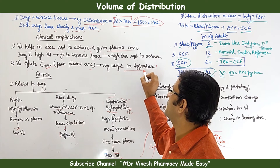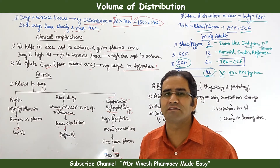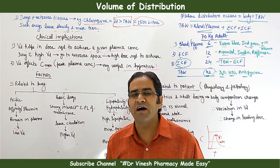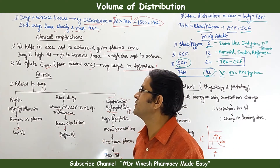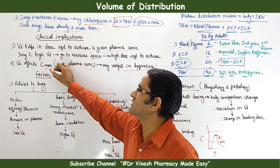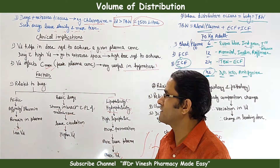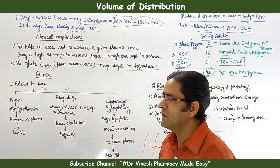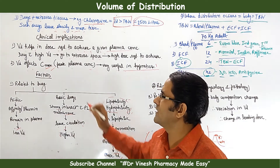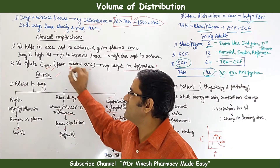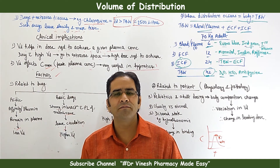The second clinical implication is that volume of distribution affects Cmax — the peak plasma concentration. This is especially important for drugs like hypnotics, whose pharmacological activity is directly related to Cmax.